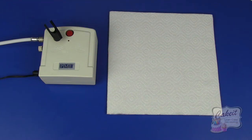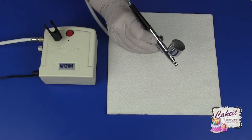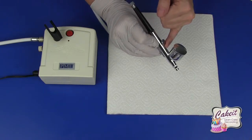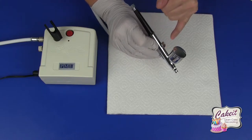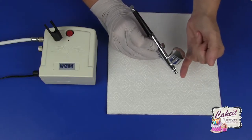First of all if we look at the airbrush, this is a single action gravity feed airbrush, which means it has a single action lever to control the airflow and a cup to feed the colour to the needle.